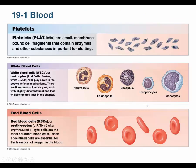Platelets are not full cells — they don't have a nucleus, and neither do red blood cells. However, platelets are actually fragments of a large cell in the bone marrow called a megakaryocyte. Pieces pinch off from the megakaryocyte and become platelets, which float in the bloodstream. Their primary function is clotting — they form a platelet plug when you cut a blood vessel.